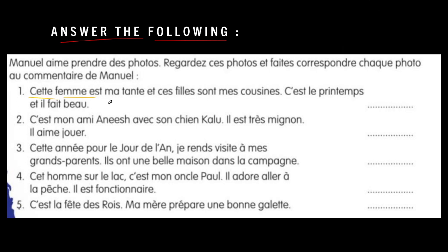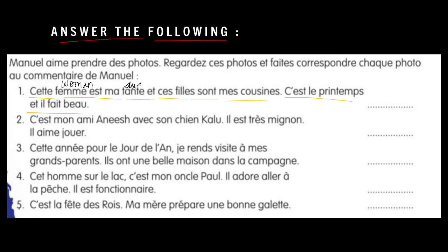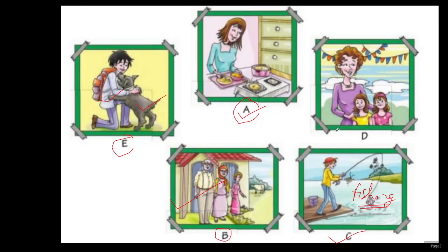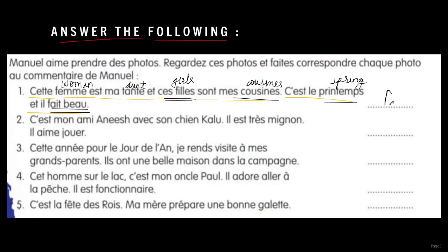So the first sentence talks about a woman — she is my aunt. There are girls — they are my cousins. It is spring season and it is very beautiful. So here if we look at the pictures, we can see one aunt and these are cousins. So picture D suits this, and we'll write D here.